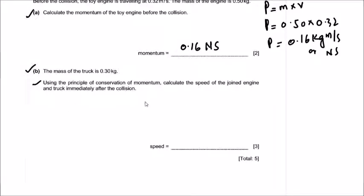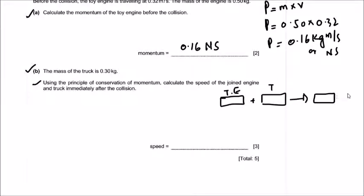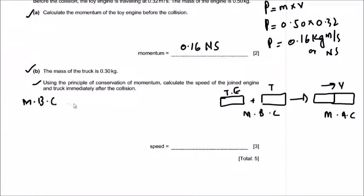Before the collision, the engine is moving and the truck is stationary. After the collision they join together and move with the same speed. The principle of conservation of momentum states: momentum before collision equals momentum after collision. Momentum of the engine before is 0.16, and the truck was at rest so its momentum was zero.